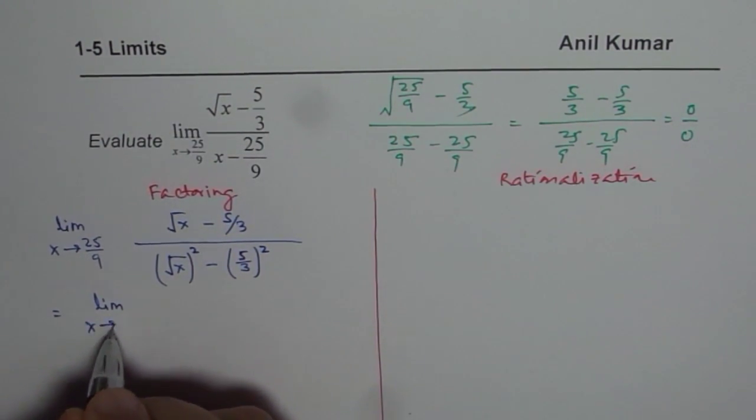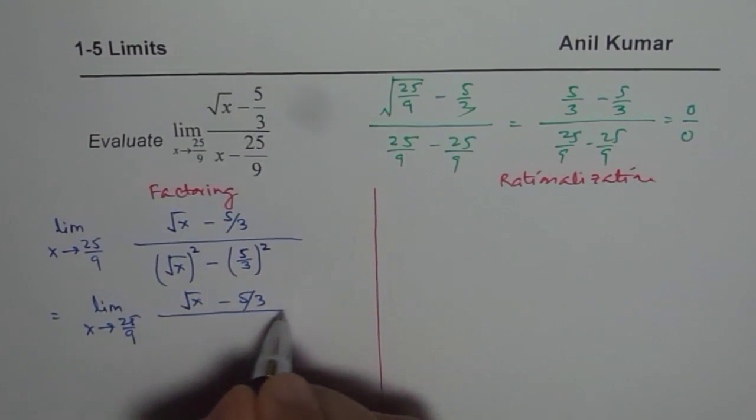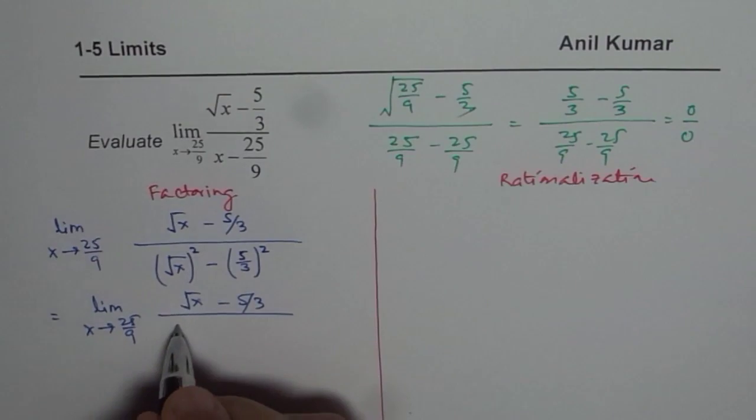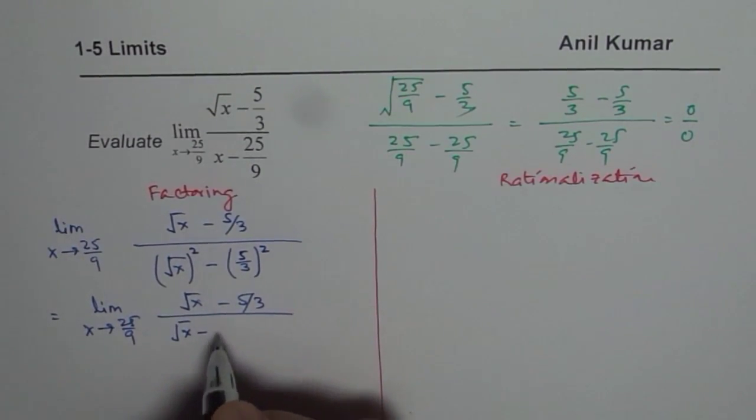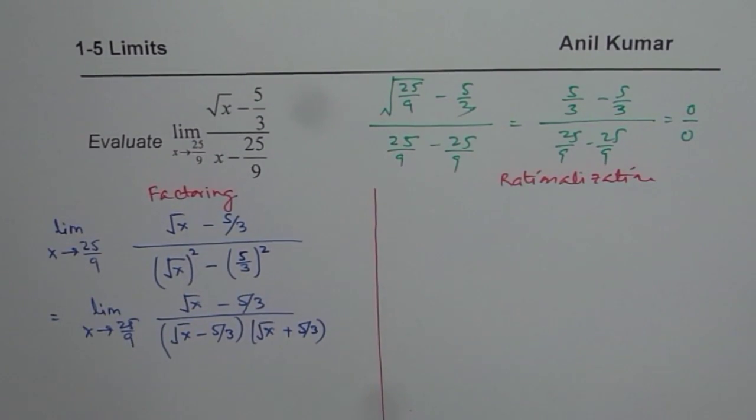So we get x approaches 25 over 9. We have square root of x minus 5 over 3 in the numerator. And here, I could write this as in factored form square root of x minus 5 over 3 times square root of x plus 5 over 3.